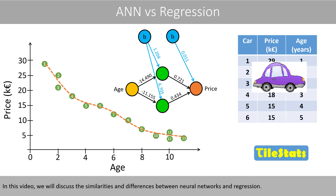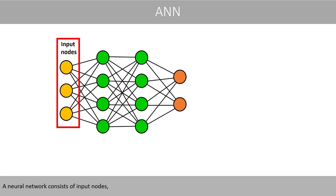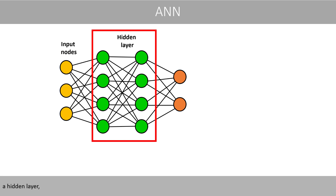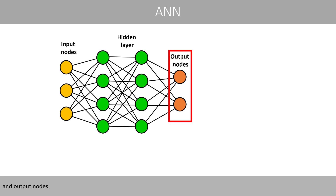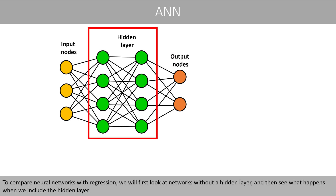In this video, we'll discuss the similarities and differences between neural networks and regression. A neural network consists of input nodes, a hidden layer, and output nodes. To compare neural networks with regression, we'll first look at networks without a hidden layer, and then see what happens when we include a hidden layer.